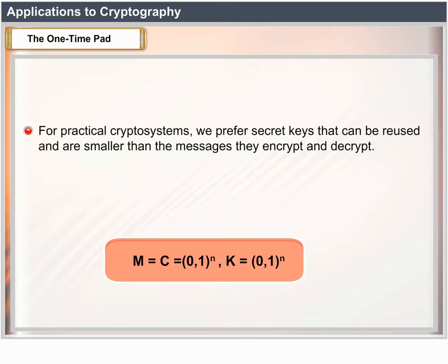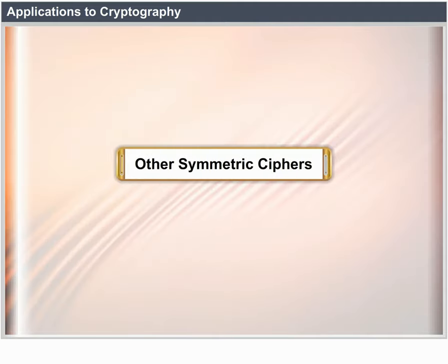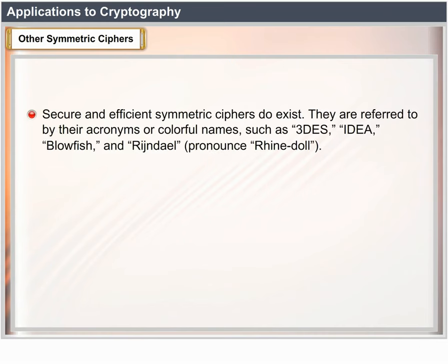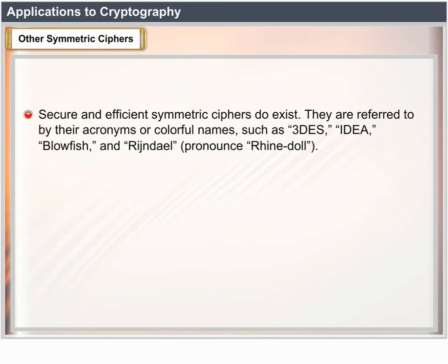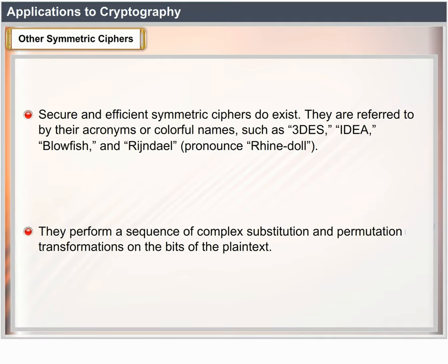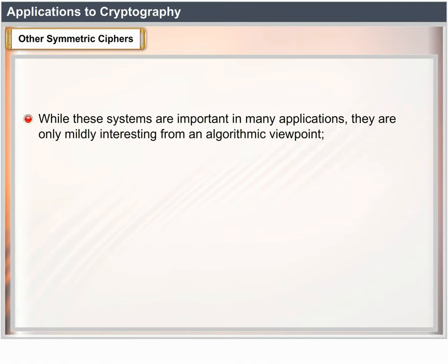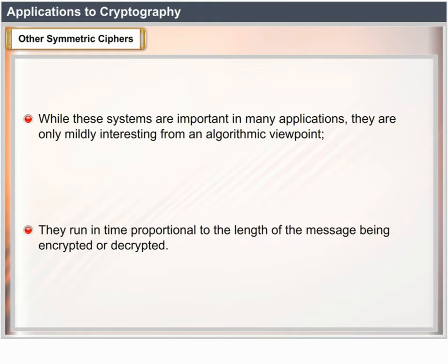For practical cryptosystems, we prefer secret keys that can be reused and are smaller than the messages they encrypt and decrypt. Other symmetric ciphers: secure and efficient symmetric ciphers do exist, referred to by their acronyms or names such as Triple DES, IDEA, Blowfish, and Rijndael. They perform a sequence of complex substitution and permutation transformations on the bits of the plain text. While these systems are important in many applications, they are only mildly interesting from an algorithmic viewpoint, running in time proportional to the length of the message.